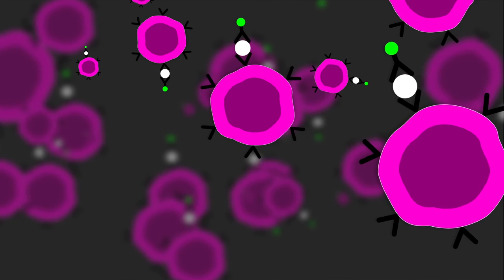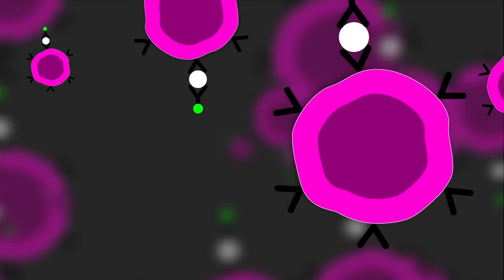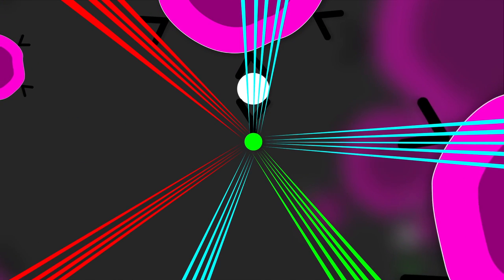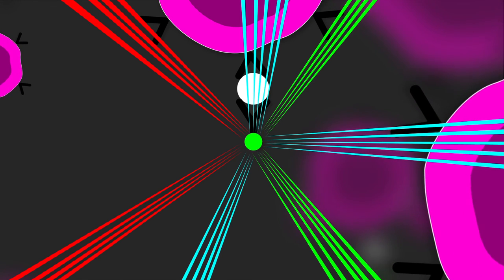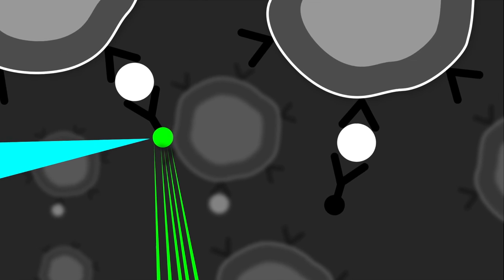This is possible because the antibodies contain molecules that absorb light and re-emit it at a different color or wavelength. Dependent on the characteristic that we are interested in, we are using different dyes.